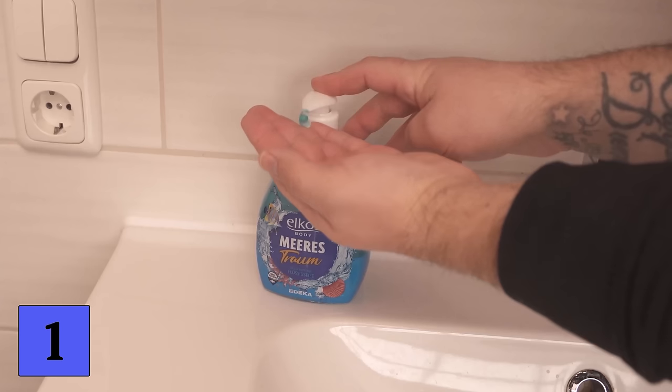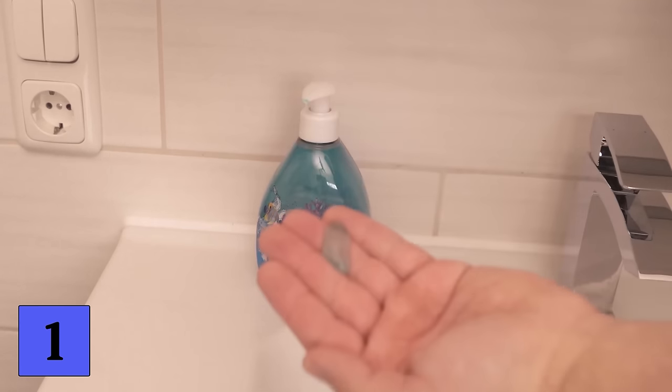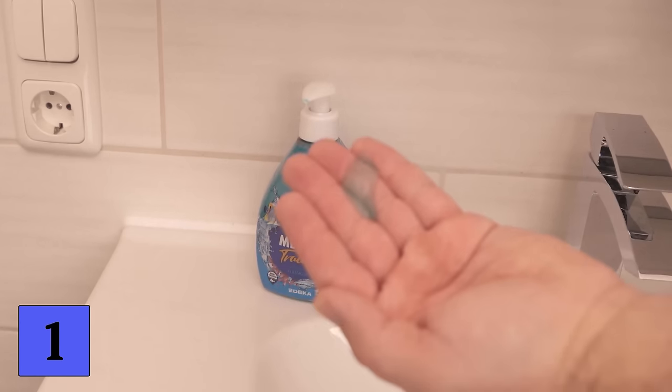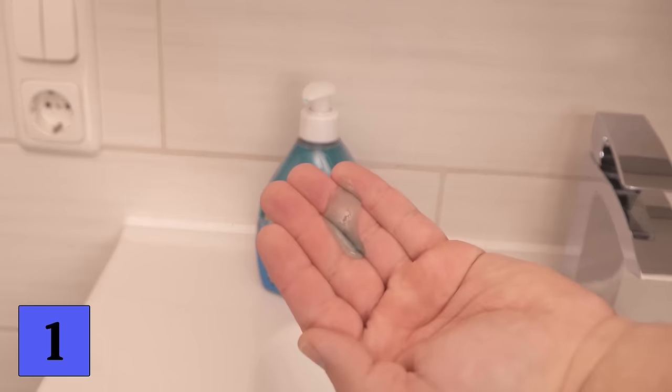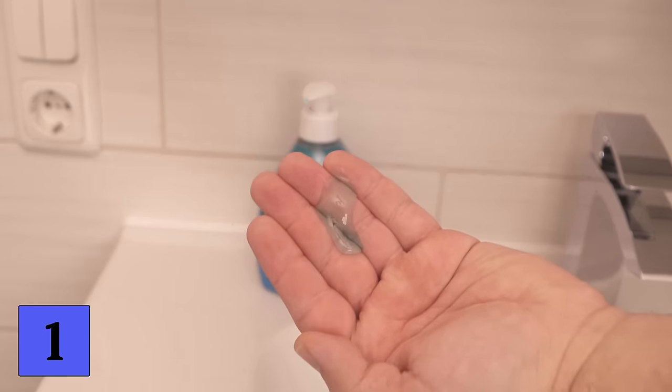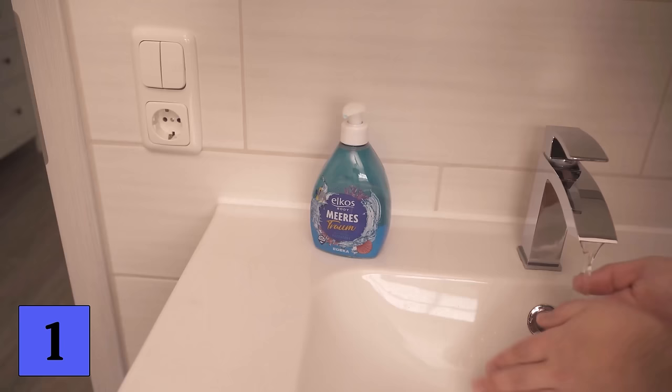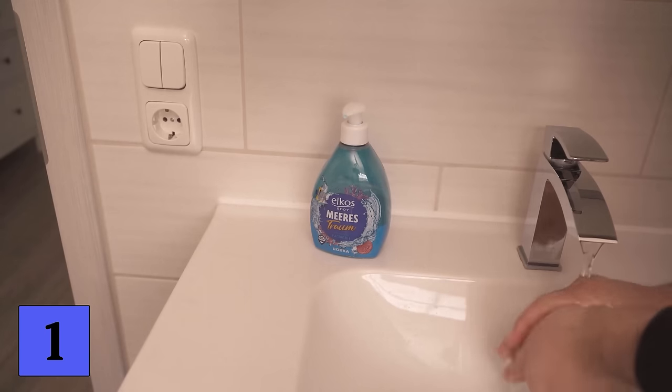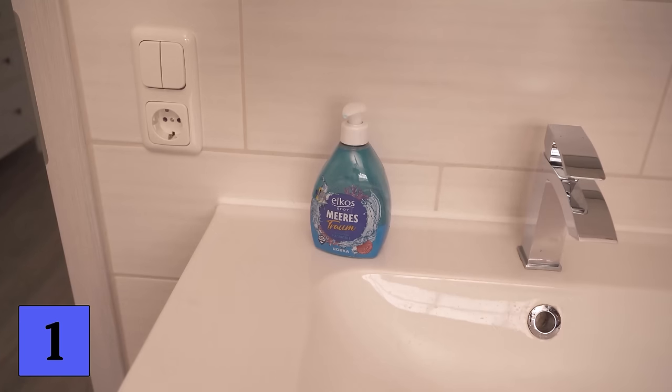If you use soap dispensers like this in your home, did you know that too much soap always comes out? When you press the soap dispenser, a certain amount of soap comes out to wash your hands, but it's really always far too much. Half the soap would be enough. This means you can save a lot of money and not waste so much soap. All you need is an ordinary rubber band.